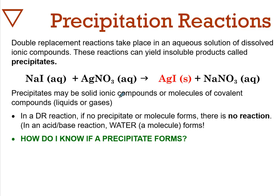Double replacement reactions take place in aqueous solution when they yield an insoluble product. We say a reaction has taken place, focusing on that insoluble product formation. If no precipitate or new molecule forms, there is no reaction. Keep in mind acid-base is double replacement, and we do form water, a new molecule.